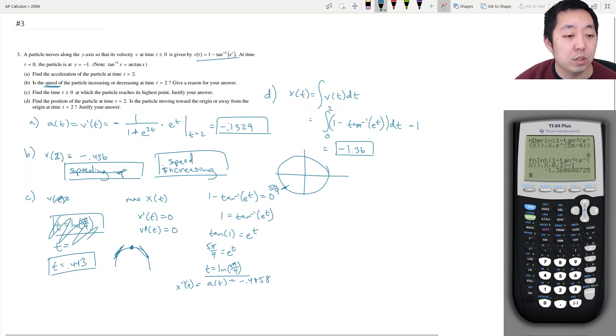Is the particle moving toward the origin or away from the origin at time t equals 2? Well, v of 2 is negative. Right? So if it's at like negative 1.36, if it's over here. And its velocity is negative. It's moving away from the origin.